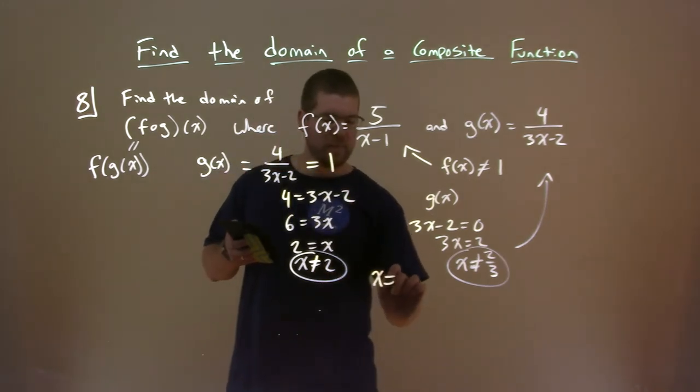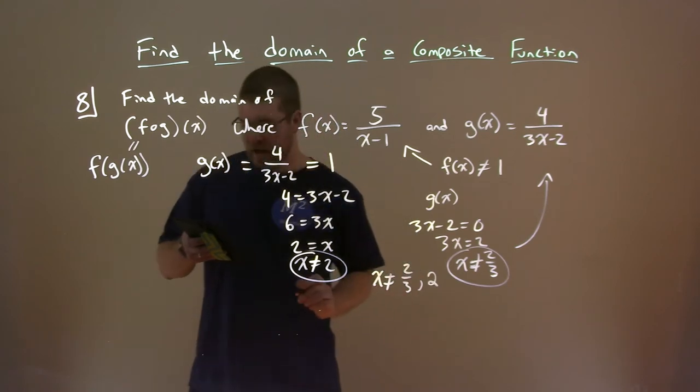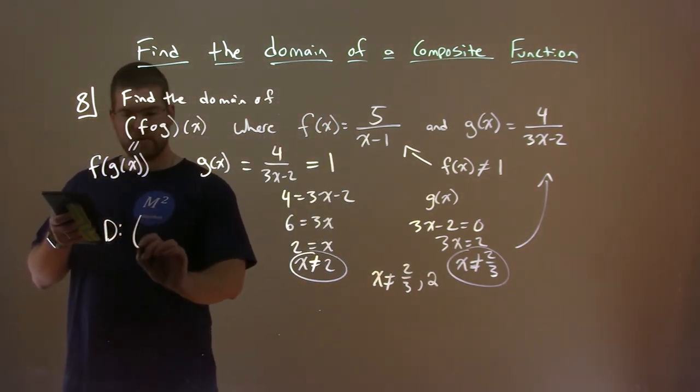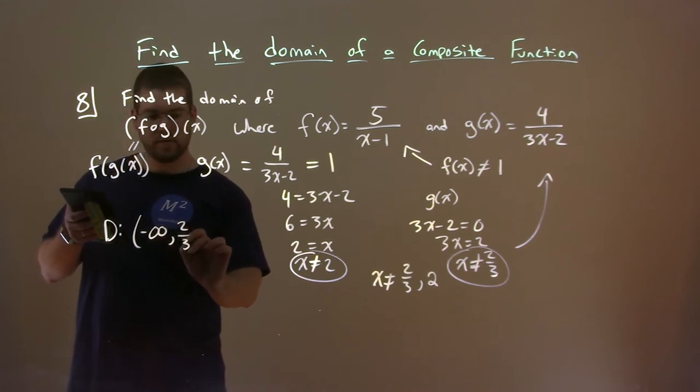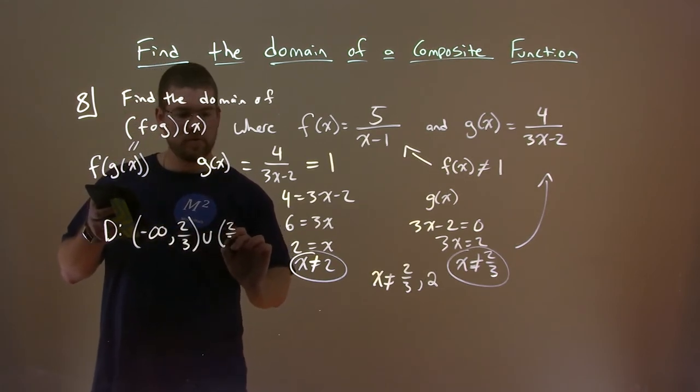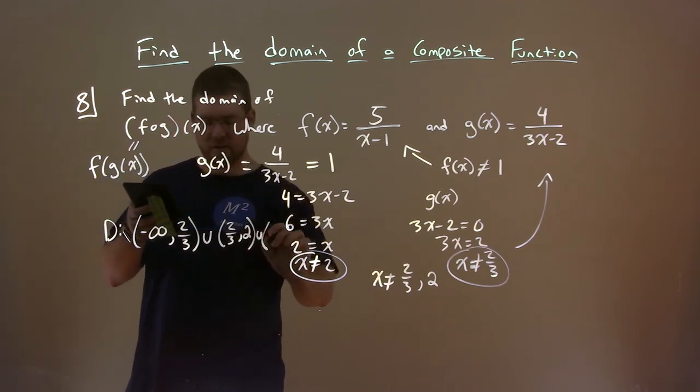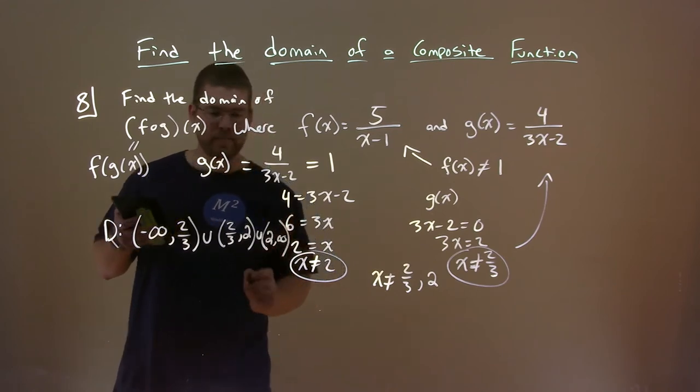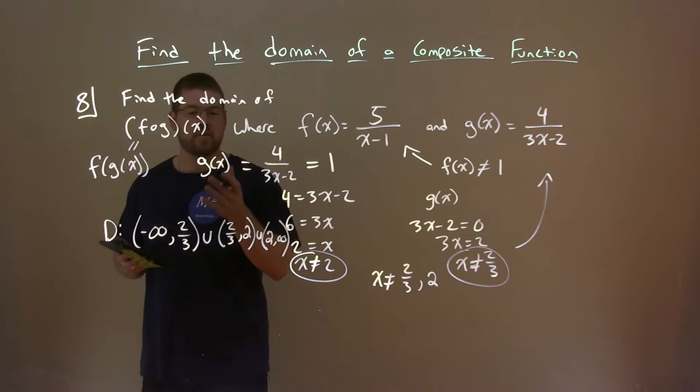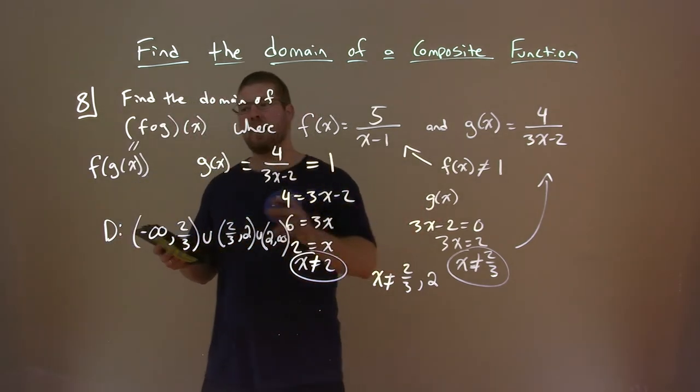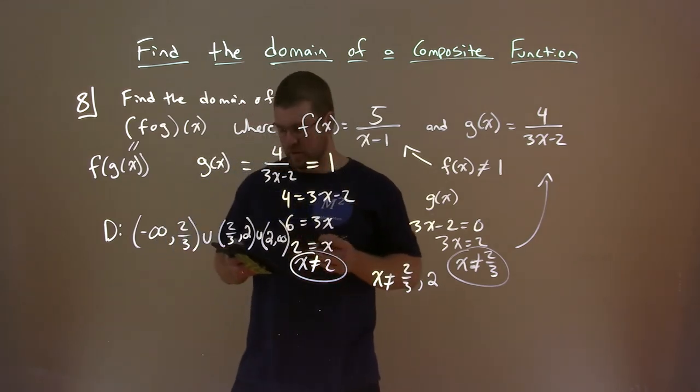So our two values that x cannot be are 2 thirds and 2. And so we can see, write the domain here in this interval notation of negative infinity to 2 thirds, union, 2 thirds to 2, union, if I can fit it in here, 2 to infinity. Oh, I ran out of room. Alright. So that's our domain. I kind of got too big there and got ahead of myself. But that's our domain there. It can equal all those values for f of g of x, but it can't equal 2 and 2 thirds.